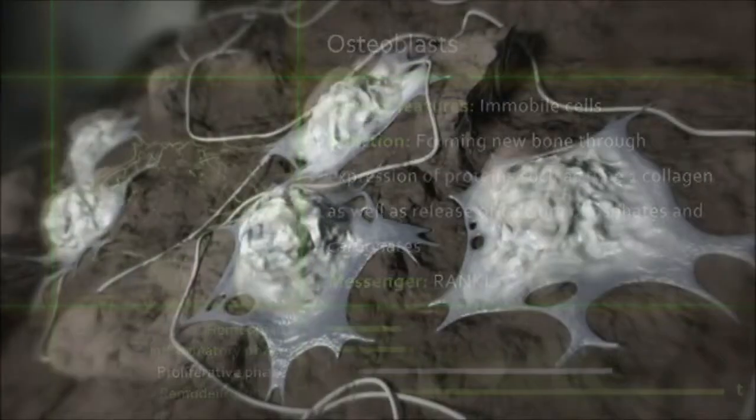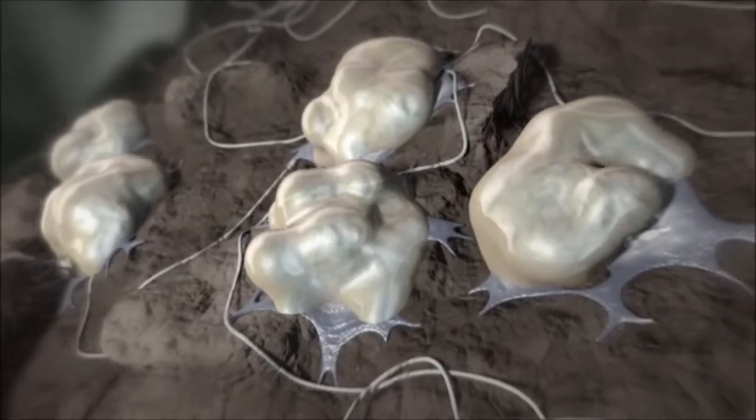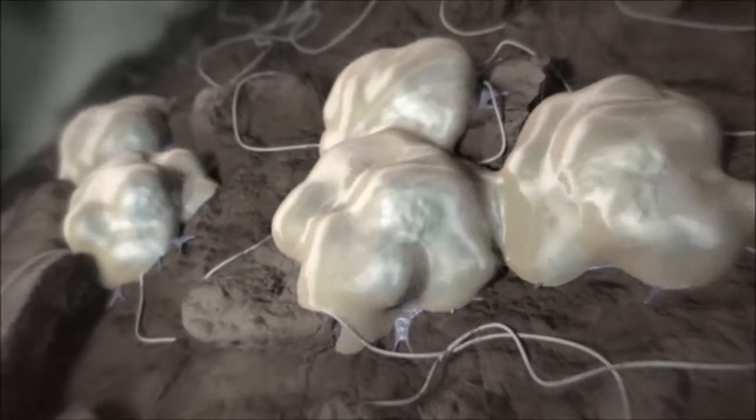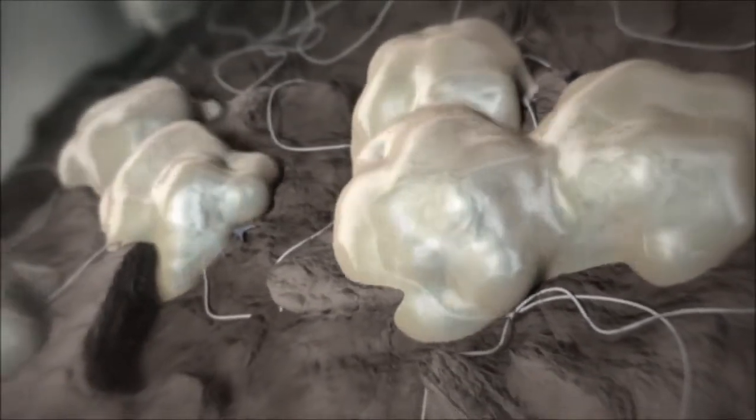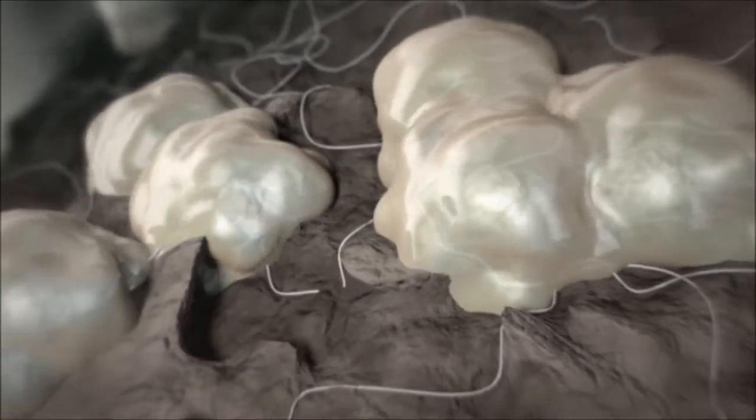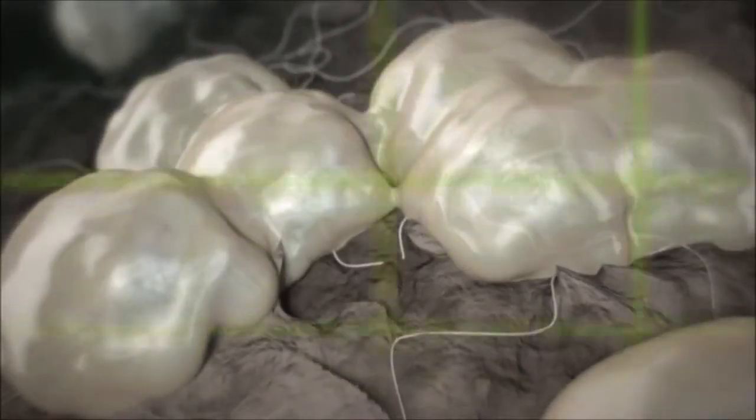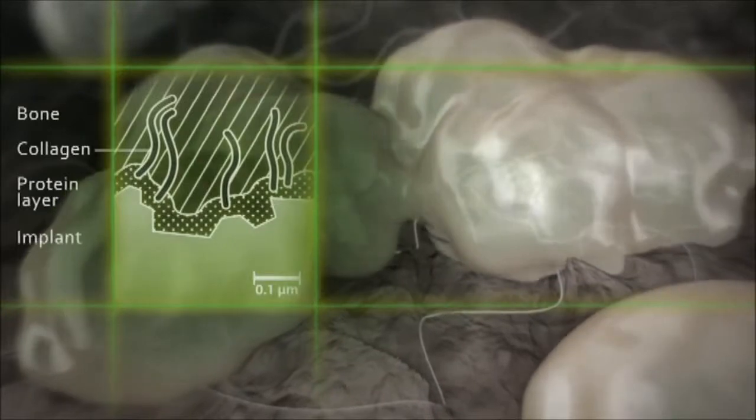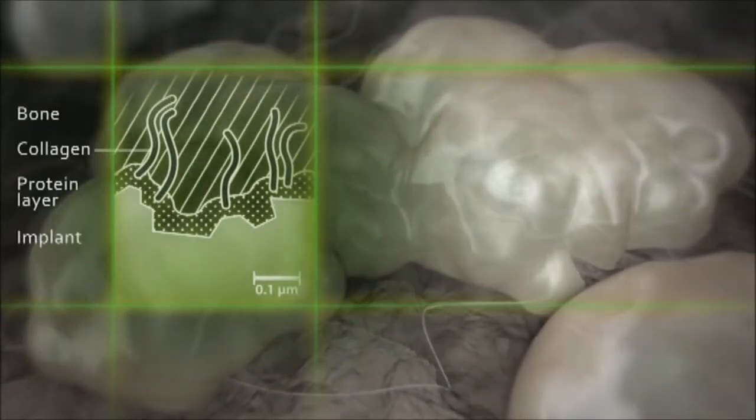The osteoblasts form an organic matrix that is mineralized by incorporating calcium phosphate. Under the optical microscope bone is visible on the implant surface. Under the electron microscope though, a thin protein layer is seen between the bone and the titanium surface. Mechanical stability is ensured by interlocking with the surface of the implant.